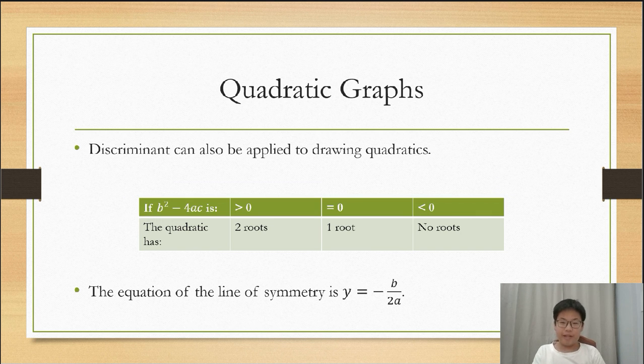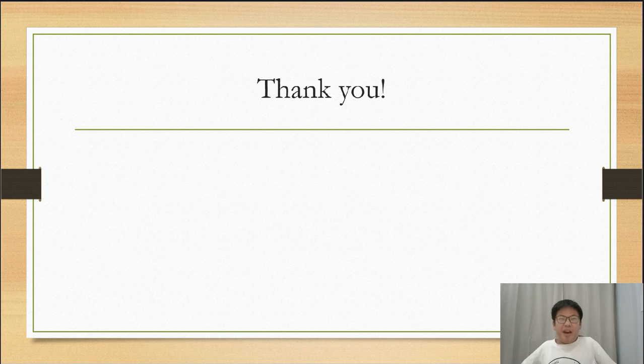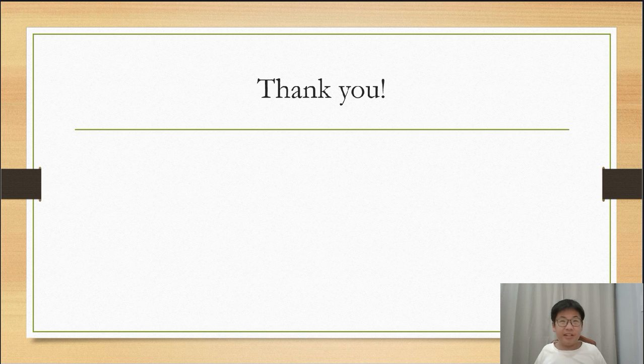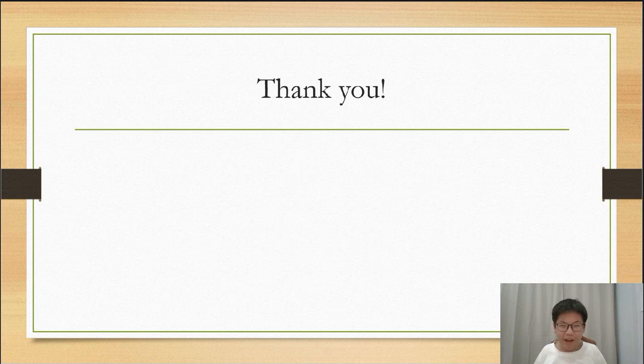The discriminant can also be applied to drawing quadratics. Below is a table on how many roots a quadratic has versus the discriminant. And finally, the equation of the line of symmetry is y equals negative b over 2a. I hope you enjoyed the mirage of formulas I just gave you. Pause the video if you want to go through it again. You can play through it at 0.75 times speed or get some subtitles which I'm going to provide in the video. Thank you and see you in my next A-Level Maths video.